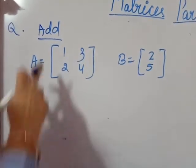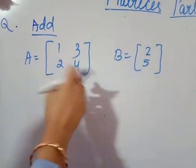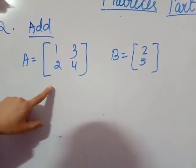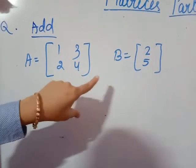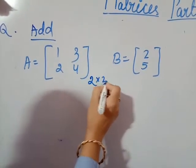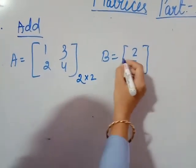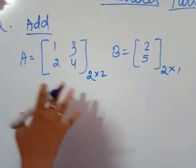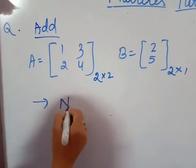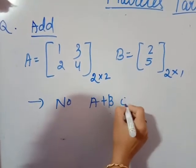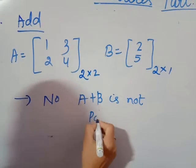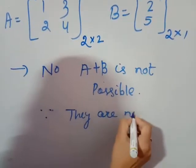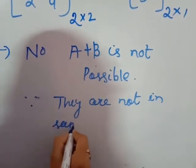I have given a question: let matrix A equal to 1, 3, 2, 4 and B equal to 2, 5. Can you add them? No, you cannot add them because they are not in the same order. Matrix A is 2×2 and matrix B is 2×1. As I told you, addition and subtraction can be done only for the same order matrices. So A plus B is not possible since they are not in the same order.